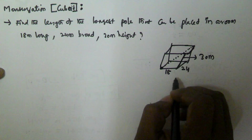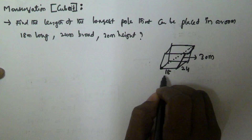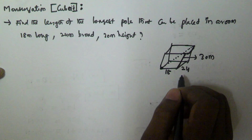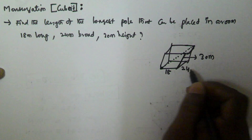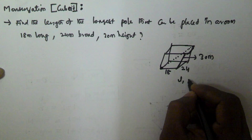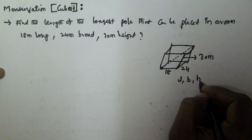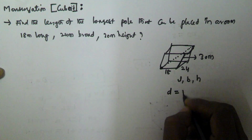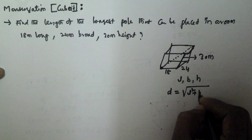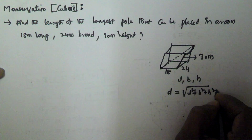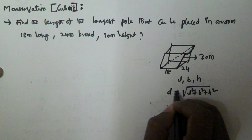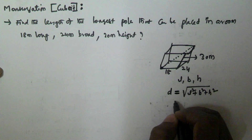So we know this is actually the length, breadth, and height are different — means all are not equal. If all are equal size then it is called a cube, but here all are not equal. So if length is given as l, breadth as b, and height as h, then the diagonal of the cuboid is given by d = √(l² + b² + h²). This diagonal length is equivalent to the longest pool, the length of the longest pool that can fit into this room.